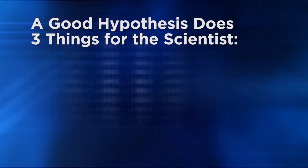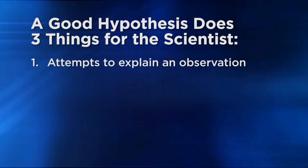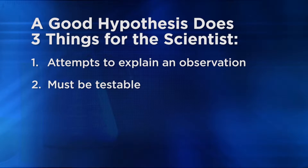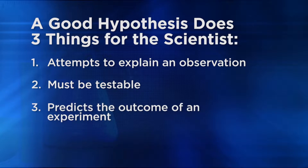A good hypothesis does three things for the scientist. First, it attempts to explain an observation — any information gathered using your five senses, sometimes with the help of lab instruments. Second, a good hypothesis must be testable, in many ways, in or outside of a laboratory setting. Finally, a good hypothesis will predict the outcome of an experiment. Hypotheses are often rejected when the outcome differs from predictions, but scientists can learn something from the test no matter what the results are.